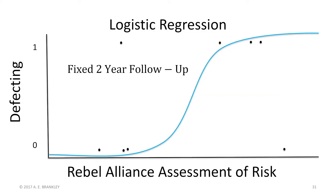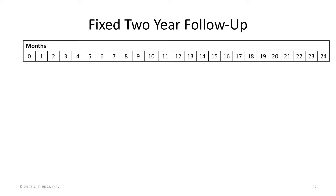We can find our absolute and relative risk information from logistic regression. Specifically, logistic regression with a fixed two-year follow-up for general recidivism, or for sexual recidivism, you would use a fixed five-year follow-up. This information should come from either a large normative sample or, for best results, a meta-analysis of fixed two-year follow-up data. So let me explain what a two-year fixed follow-up means and why it is important.